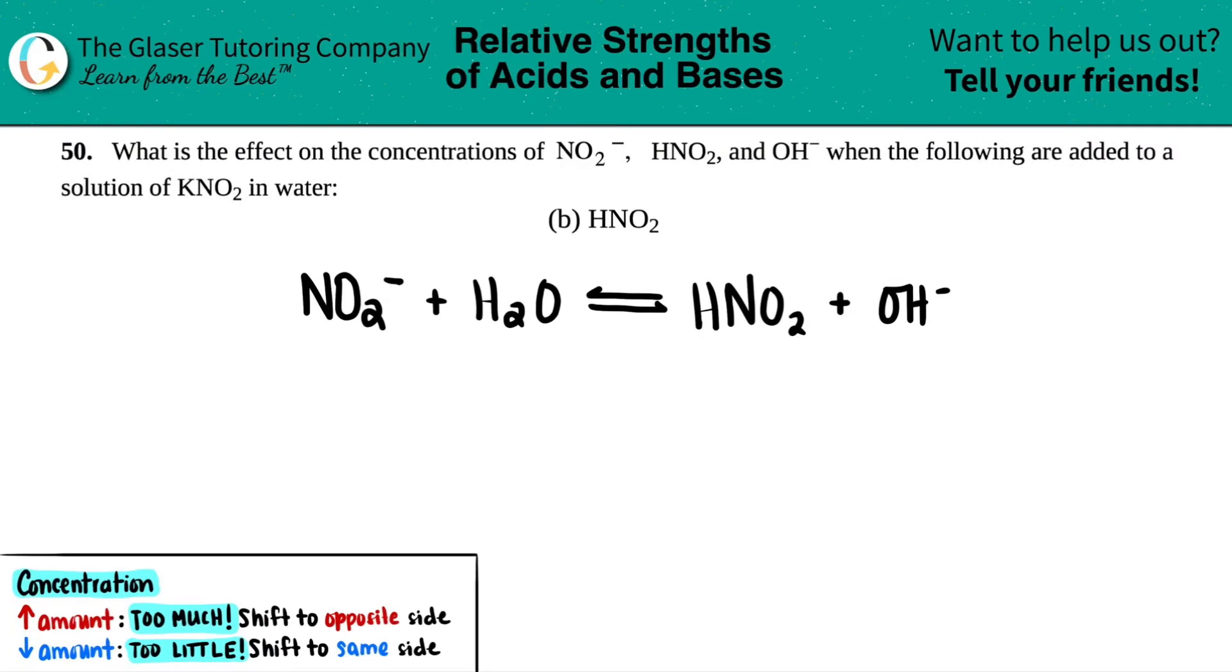Number 50. What is the effect on the concentrations of NO2 minus, HNO2, and OH minus when the following are added to a solution of KNO2 in water? So we're at letter B. We just have to figure out what's going to happen when we're adding where we added HNO2 to KNO2 in water.